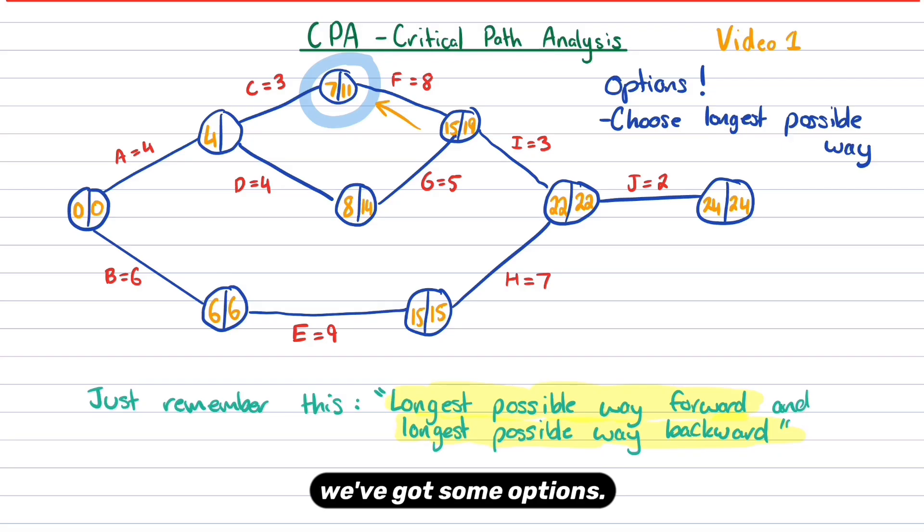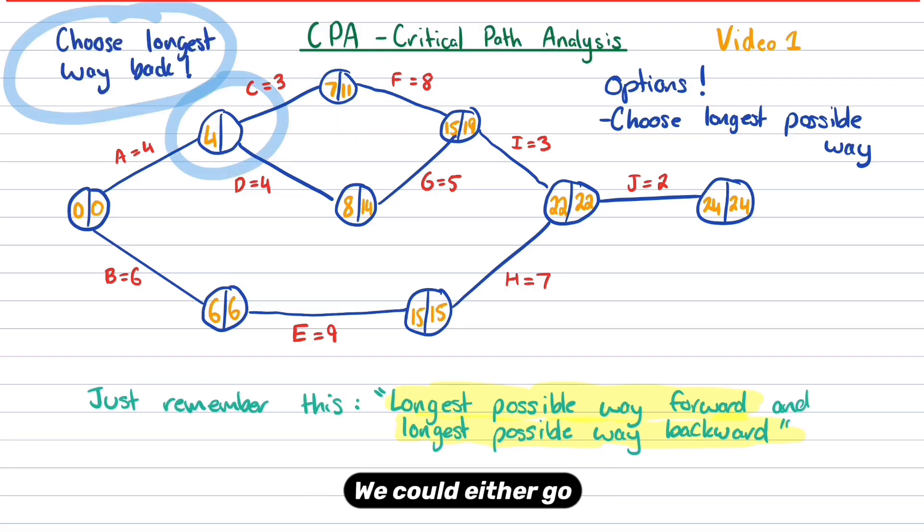Now here we've got some options. We could either go five and four, or we could go eight and three. But remember we want to choose the longest way backwards. The longest way backwards would be going eight and three. So 11 take away three, 11 take away three is eight. So a little bit of a typo that should be an eight in that cell, not a nine.